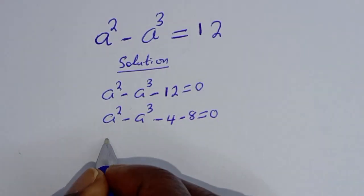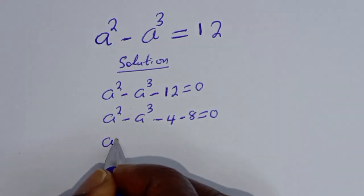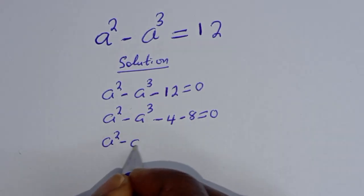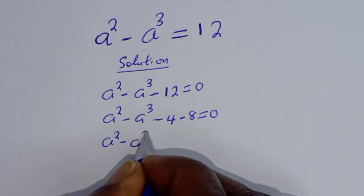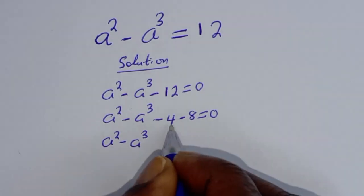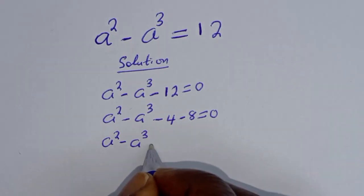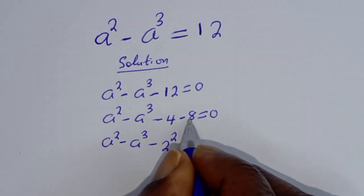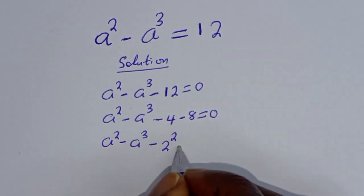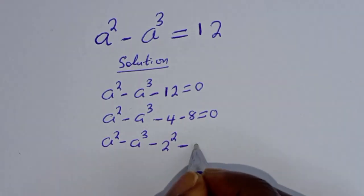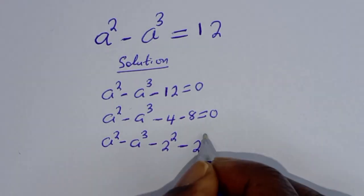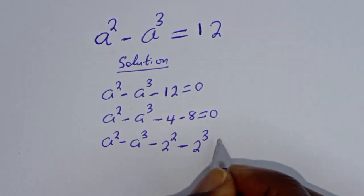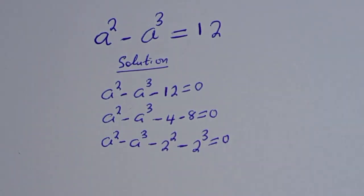This expression a squared minus a raised to power 3 minus 12 can be rewritten as a squared minus 2 squared, minus a raised to power 3 minus 2 raised to power 3, equal to 0.